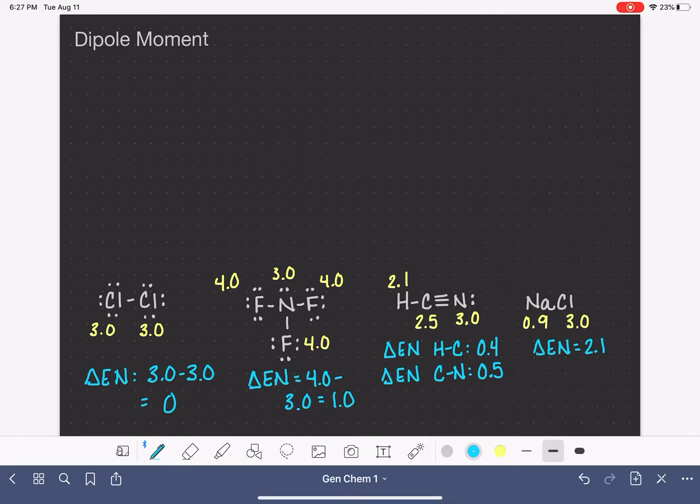The dipole moment is a description that is used to show how the electrons are distributed or spread out in a polar covalent bond.